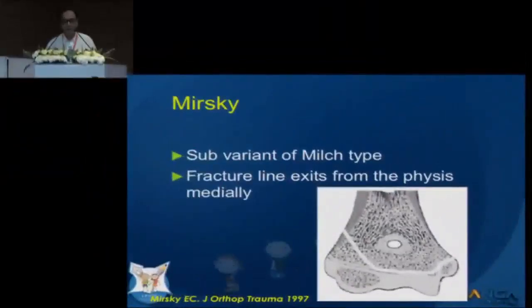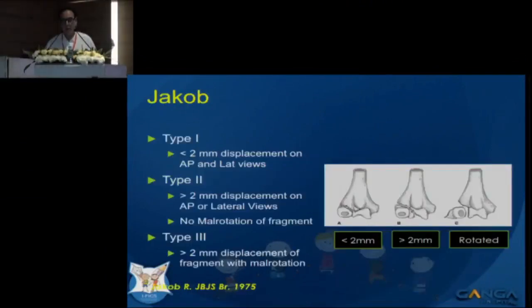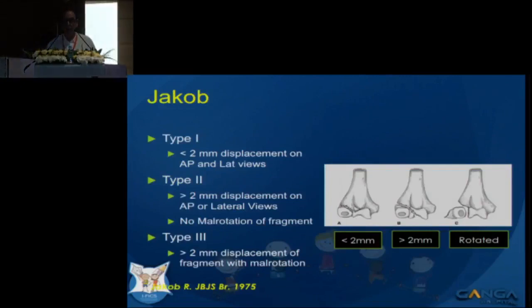Milch really gave the first classification, which is a mechanistic classification dividing fractures into pull-off and push-off types. This doesn't give much idea about how to treat these fractures. Merscreed later subclassified this into another variant in which the fracture line traverses through the physis and comes out medially. Jacob then came up with the first useful classification, describing minimally displaced fractures of less than two millimeters, fractures greater than two millimeters, and those which were displaced as well as rotated.